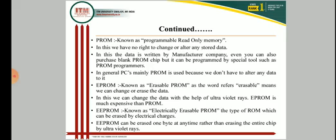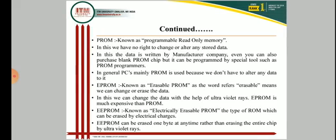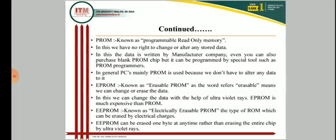EPROM is erasable PROM, which means the data can be erased and changed. This data can be changed by using ultraviolet radiations or rays, and is more expensive than PROM. EEPROM is electronically erasable PROM, where the data of ROM can be erased by electrical charge. EEPROM can be erased one byte at a time rather than erasing the entire chip using ultraviolet radiations.